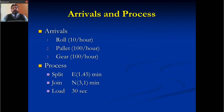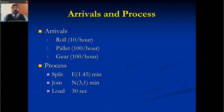We need some more information for this process to be simulated. For the arrivals: 10 rolls per hour, 100 pallets per hour, and 100 gears per hour. For the process, when we split, it's going to take 1.45 minutes with an exponential distribution. When we join parts, it's going to be 3 minutes with a standard deviation of 1, following a normal distribution. And when we load something, it's going to take 30 seconds.